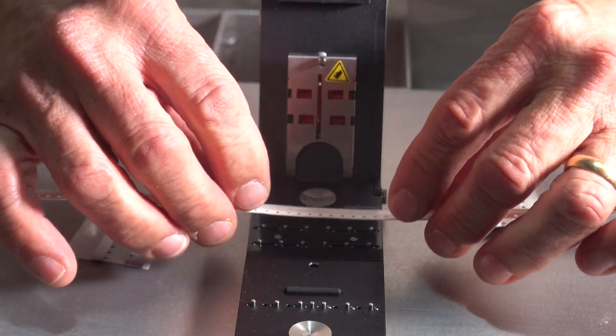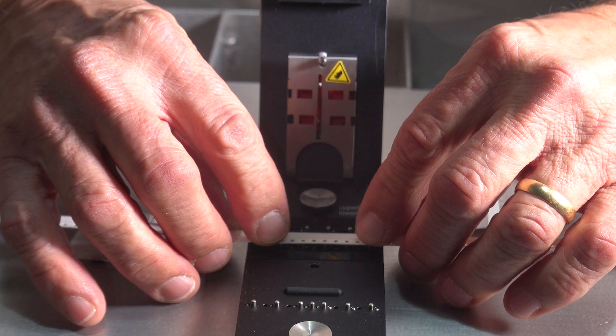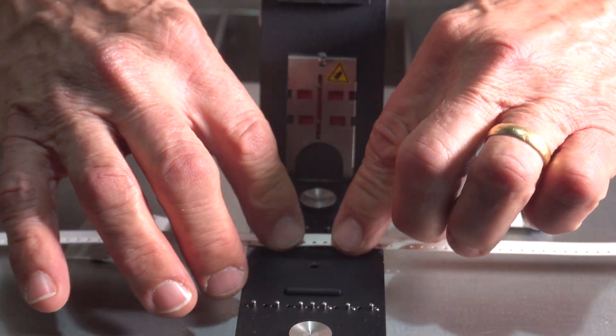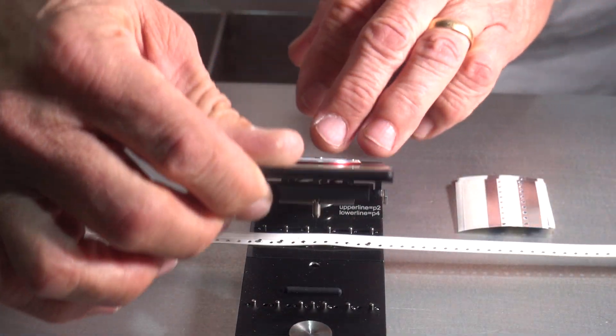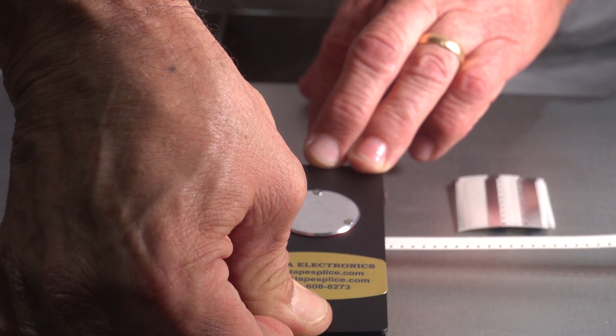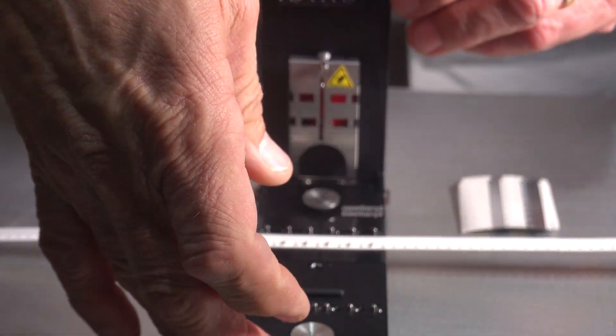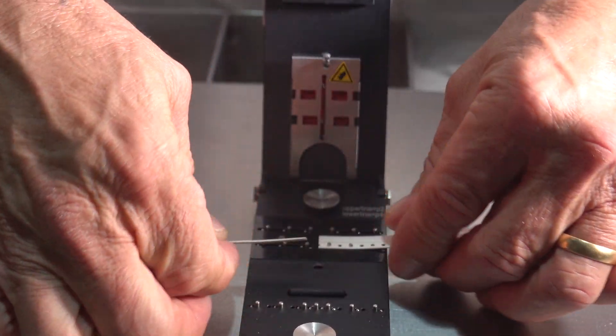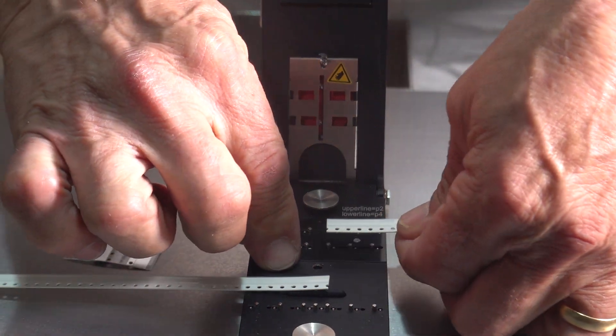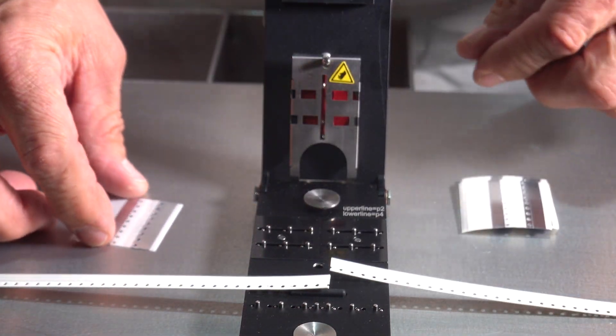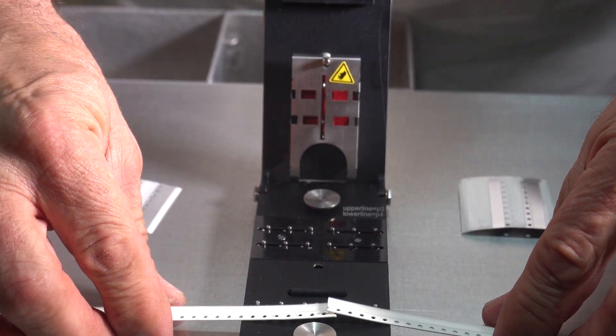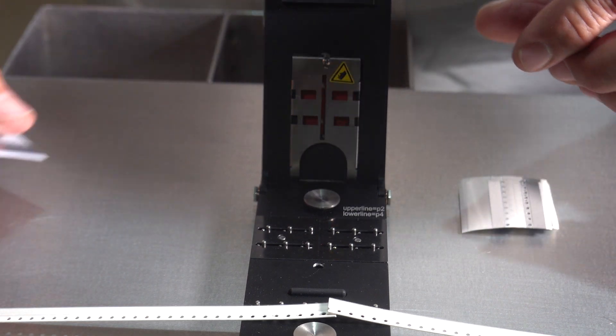Basically the way it works is we will put the carrier tape to be spliced in there. We will press down on it firmly, lift it back up, and we have a perfect cut right there on the carrier tapes. That is an 8mm paper tape that we're looking at.